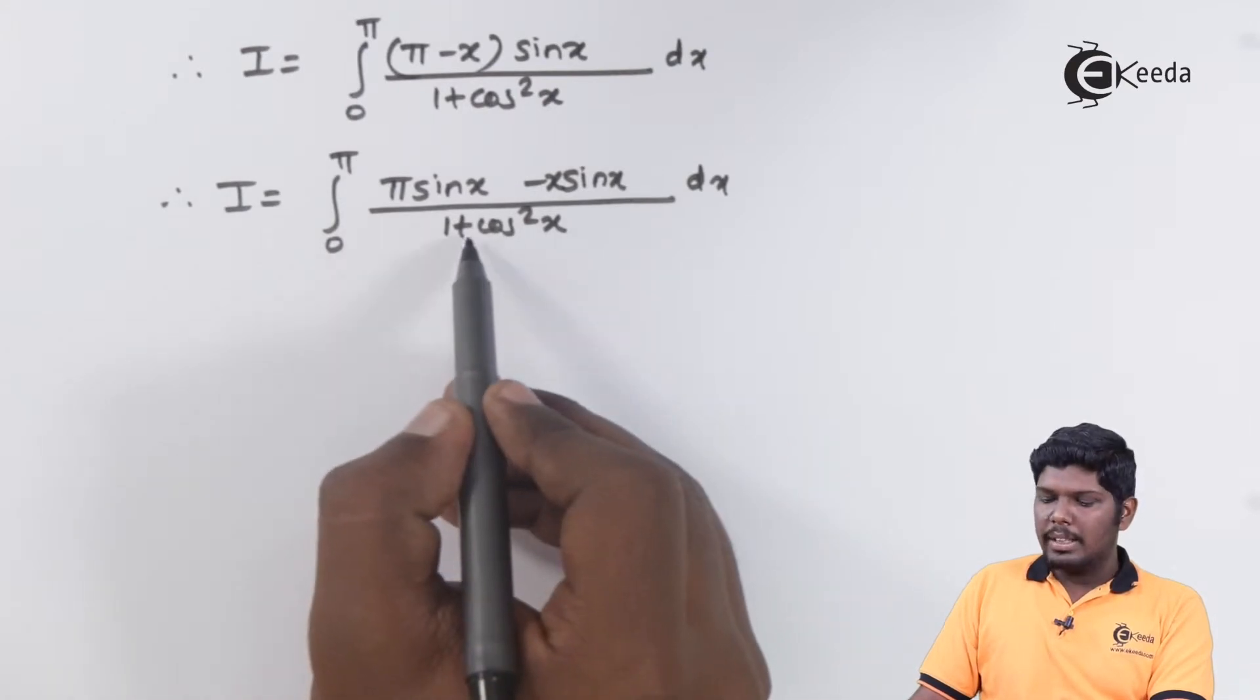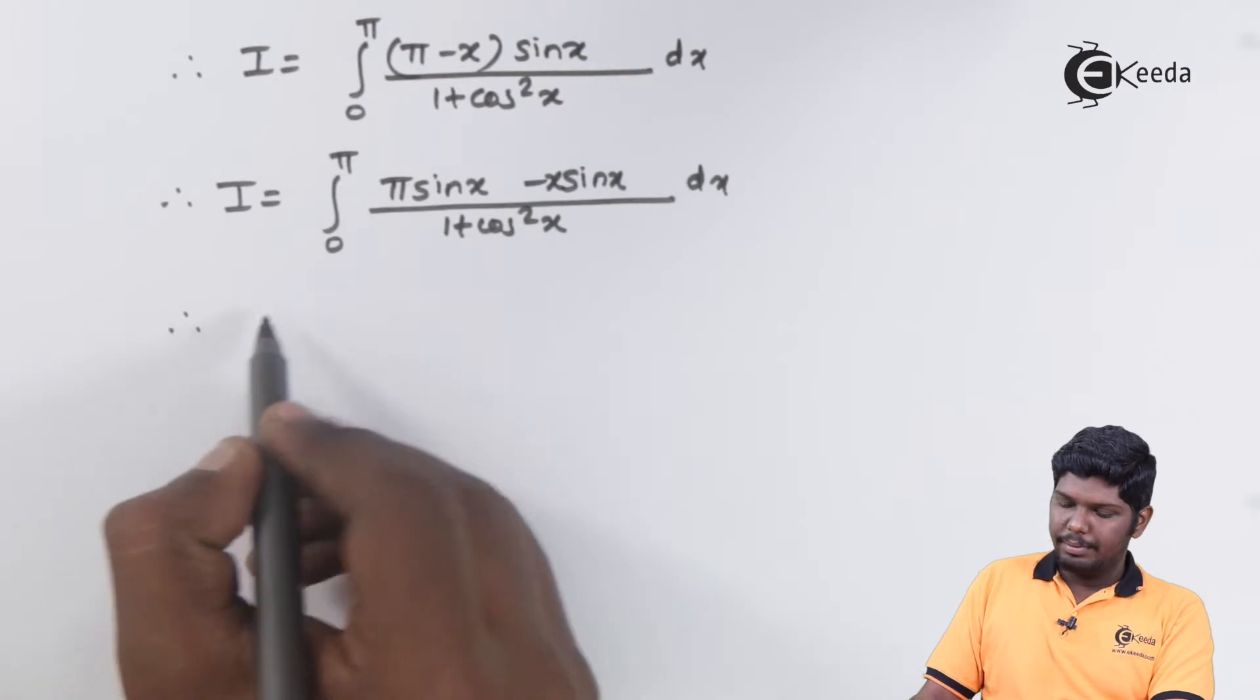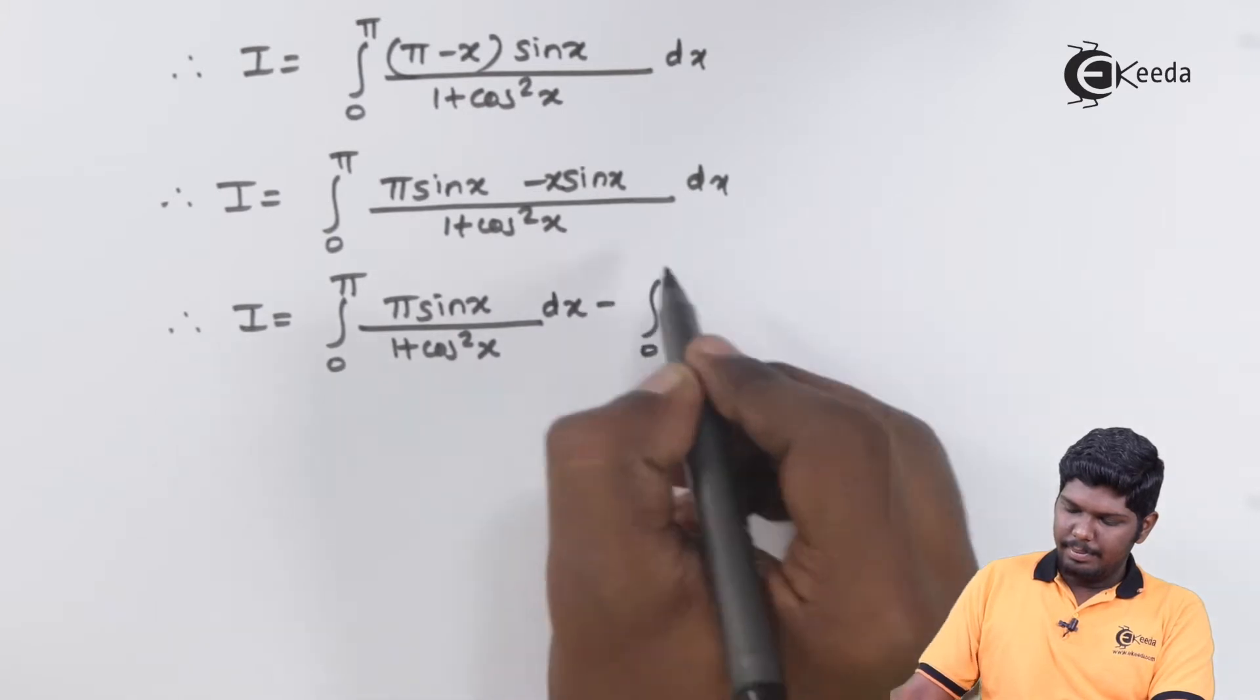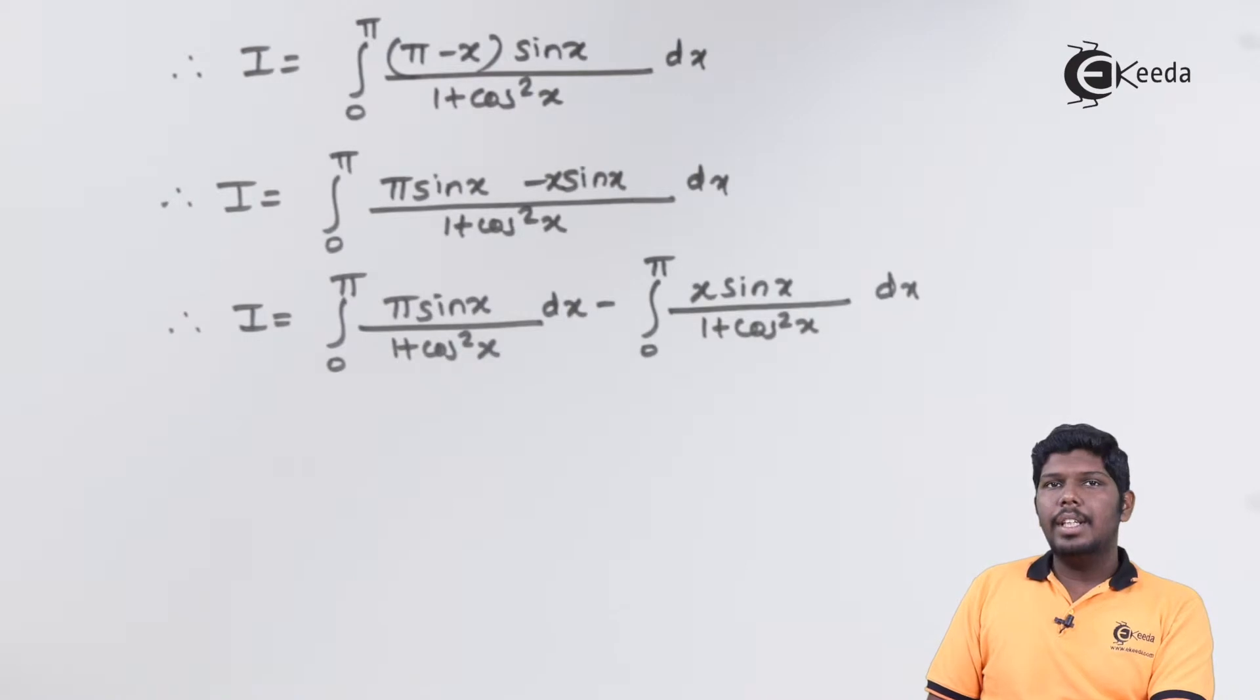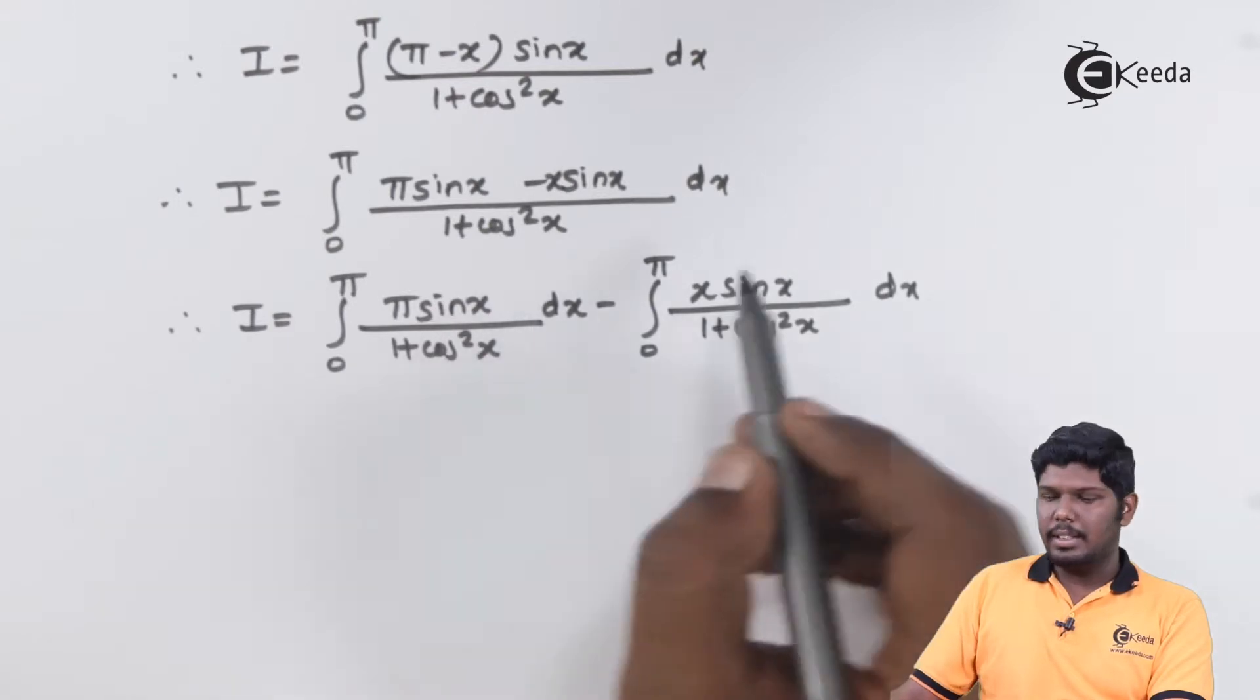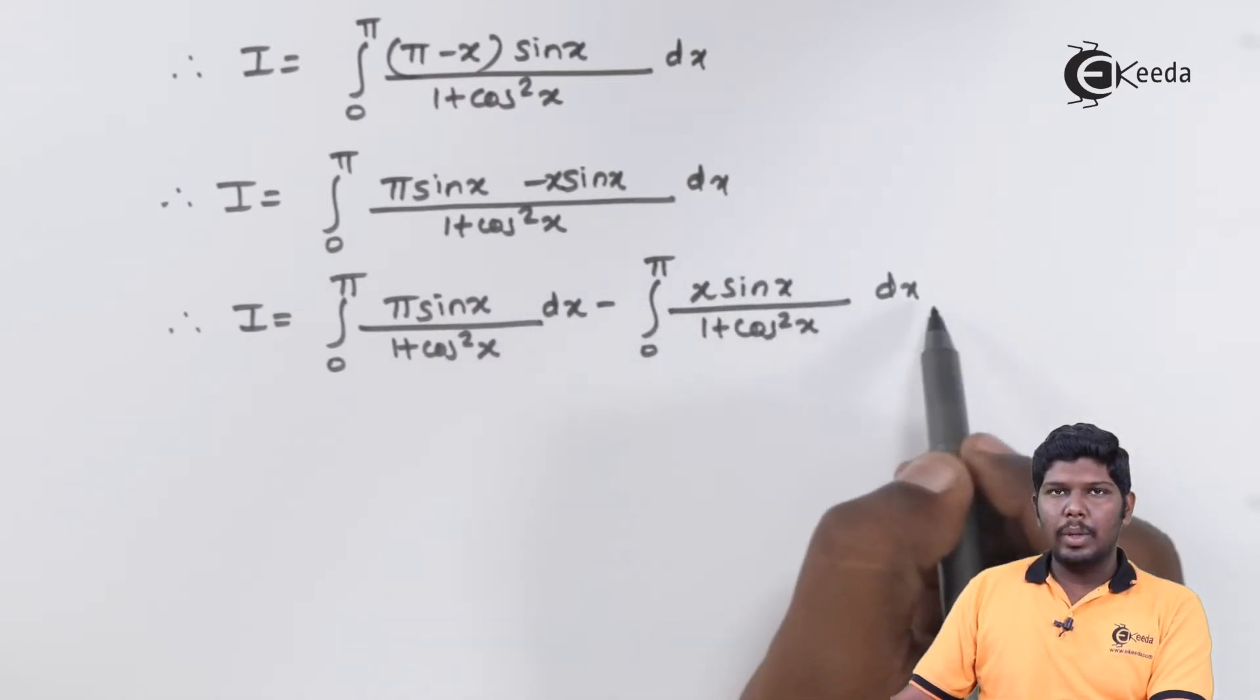In the next step, we can separate the denominator to both the terms present in the numerator. On changing the integral, this will give you integral 0 to pi, pi sin x upon 1 plus cos square x dx minus 0 to pi x sin x upon 1 plus cos square x dx.